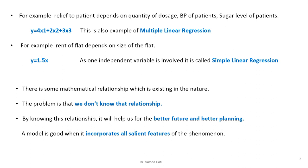For example, relief to patients depends on quantity of dosage, BP of patients, and sugar level of the patient. The equation is y equal to 4x1 plus 2x2 plus 3x3. This is again an example of multiple linear regression, as x1, x2, x3 are independent variables. We are required to find out the parameters: 4 associated with x1, 2 associated with x2, and 3 associated with x3.